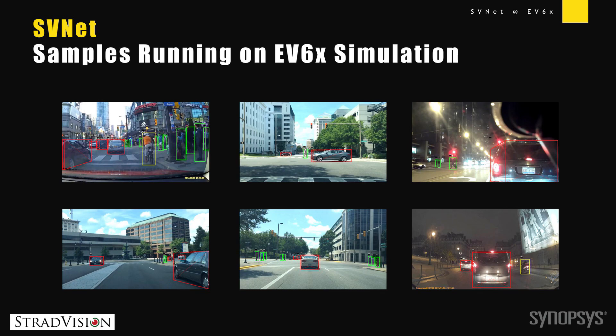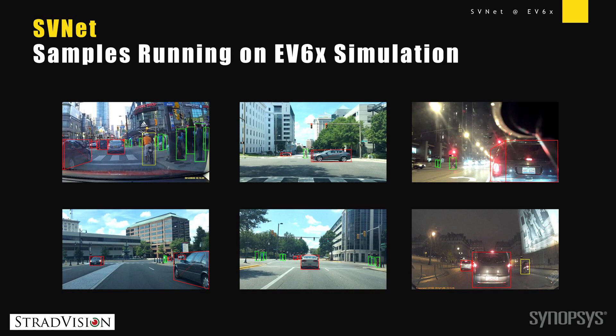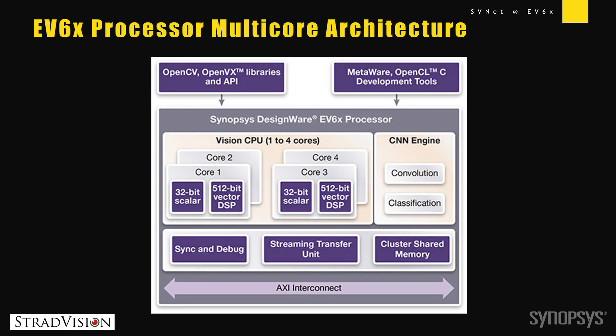Can you talk a little bit about the platform — moving to an embedded vision processor? Sure. We are working on optimizing SVNet onto the EV6X processor. There is a unique CNN engine, which is dedicated hardware for convolution and fully connected operations. We are going to optimize SVNet to utilize all the available resources in the EV6X.